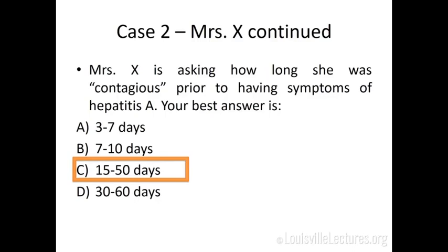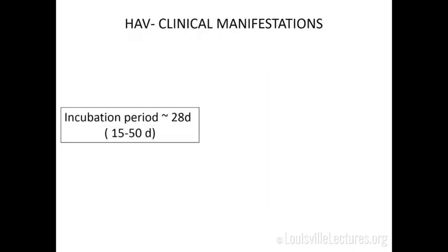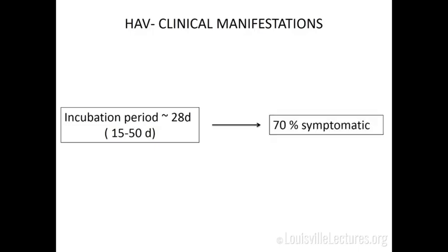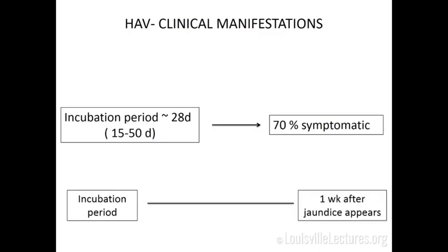Throughout the incubation period and through about one week after jaundice appears, you are considered contagious. Clinical manifestations include abrupt onset of nausea, vomiting, anorexia, fever, malaise, and abdominal pain. Within a few days to one week, the classic presentation develops: dark urine, pale stools, jaundice, and pruritus — in about 40 to 70% of patients. About 80% of patients will have hepatomegaly.